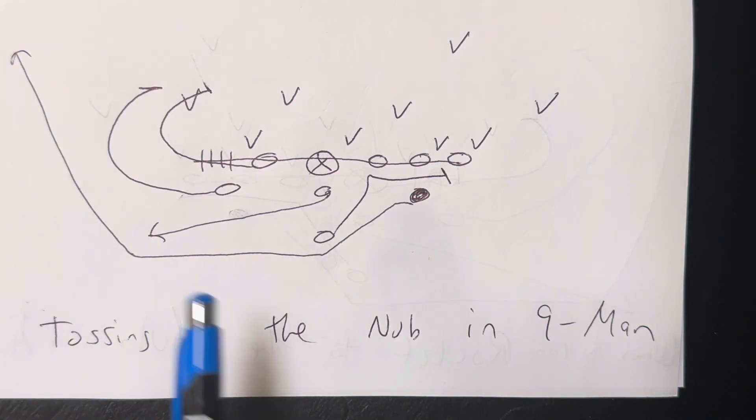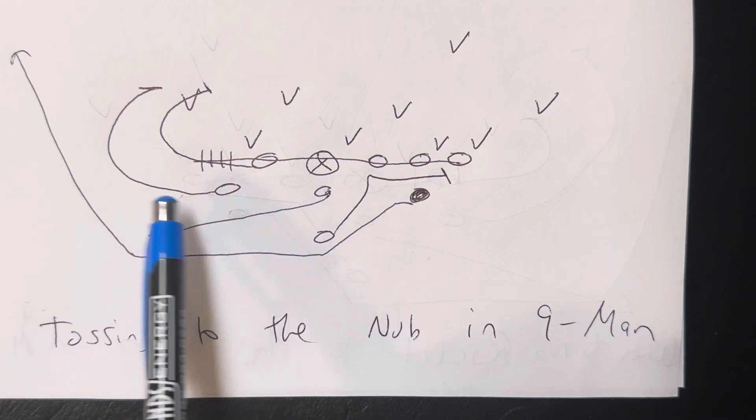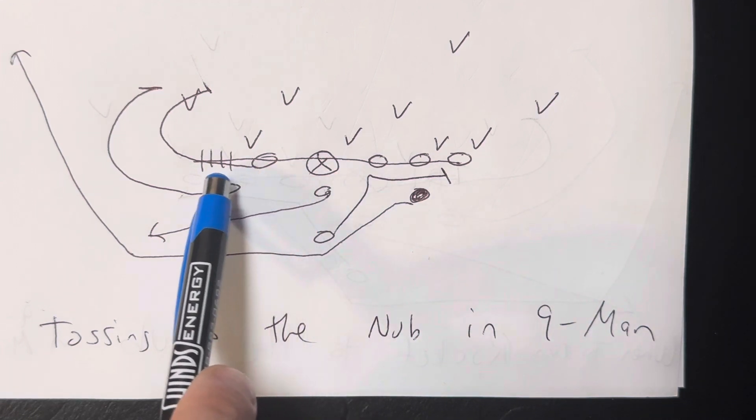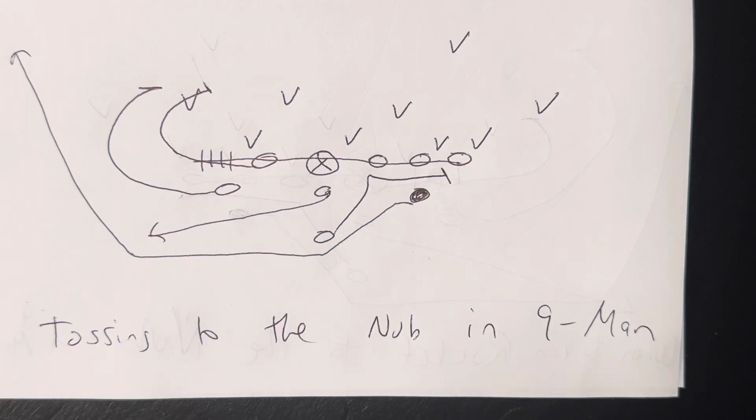So what's going to happen is the A back is going to take three flat steps, step at 45 degrees, block the widest guy, and put his right knee through the crotch of that player. The guard is going to pull, turn up just inside the A back, and block the next widest guy.